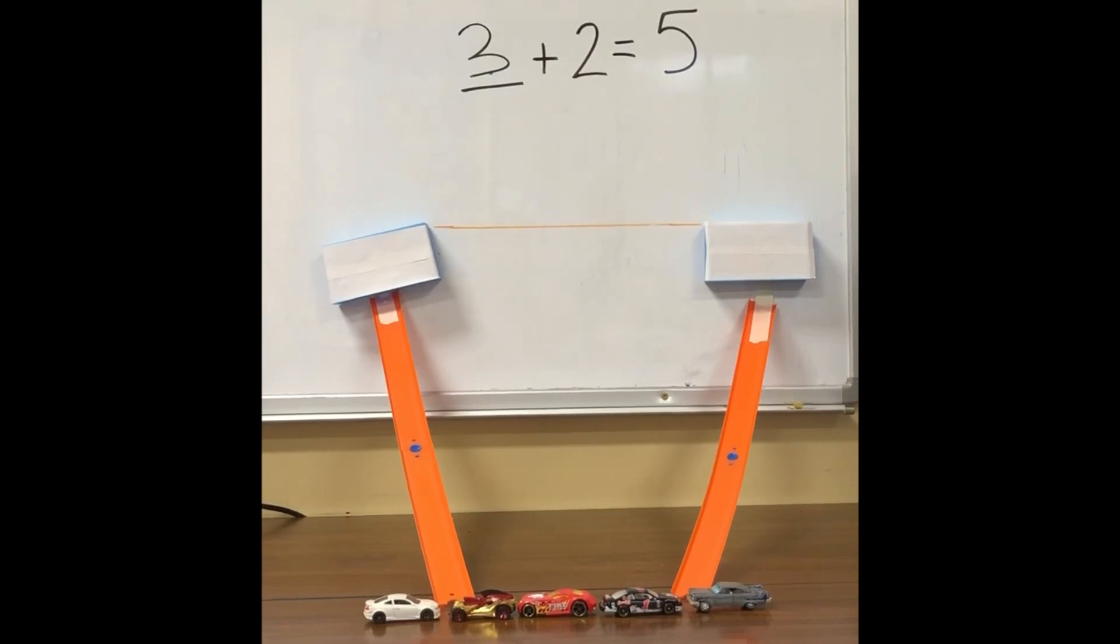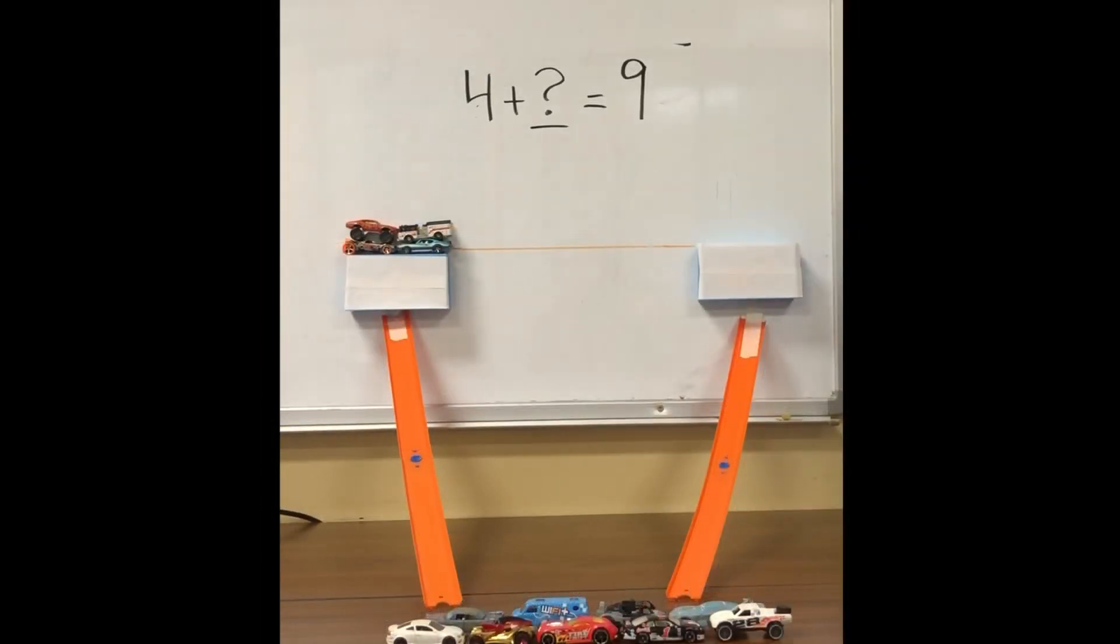Let's try another equation. Let's look at this equation. 4 plus unknown equals 9. So we know the sum. The total number of cars at the bottom of our triangle is 9. One of our addends is 4 and the other addend is unknown.